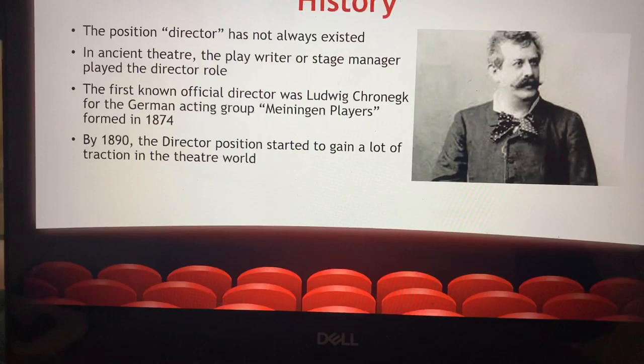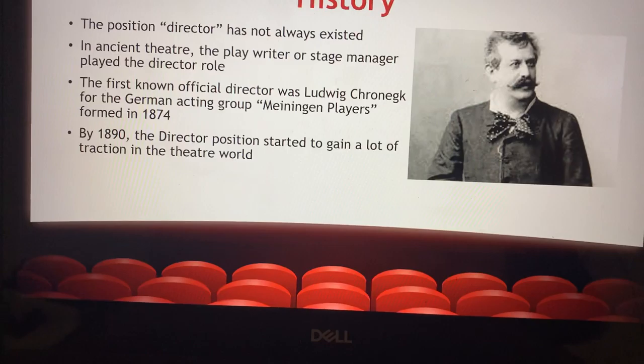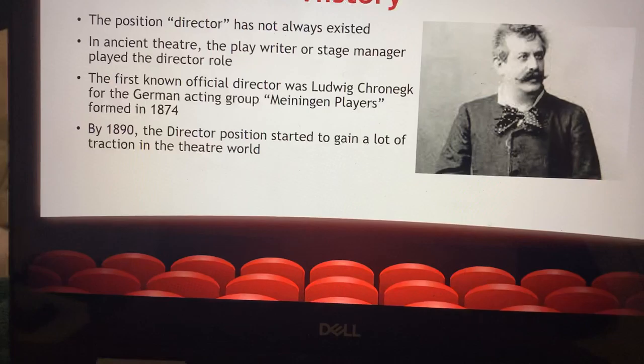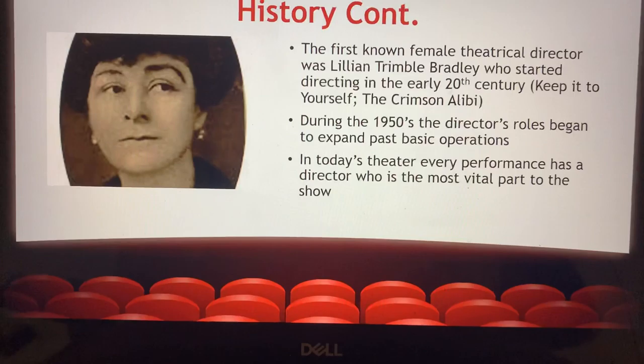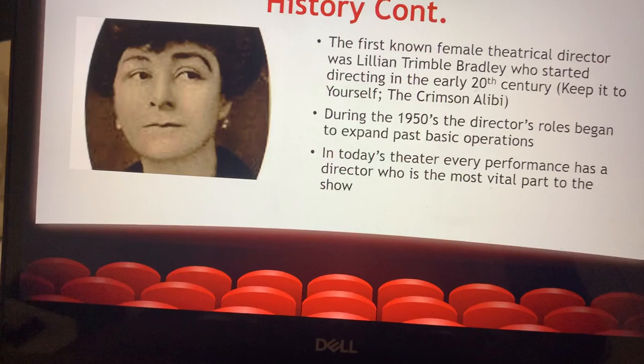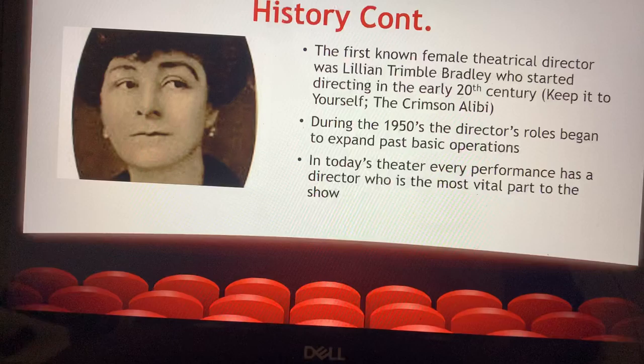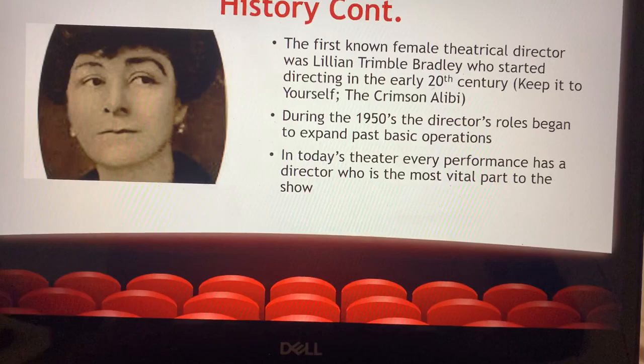Ludwig Schoenig and the rest of his team all worked together very closely. Ludwig was the director, but everyone collaborated, so he didn't carry as many responsibilities as a modern-day director might. By 1890, the official title and position of director started to gain a lot of traction in the theater world, and most plays and theater performances had an official director.